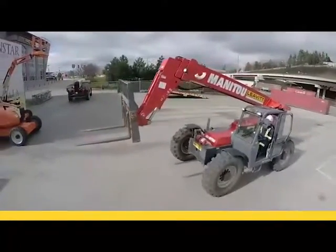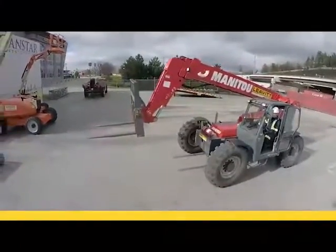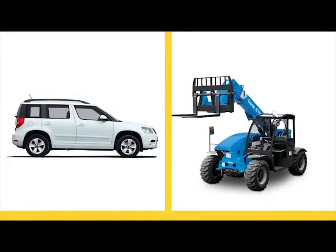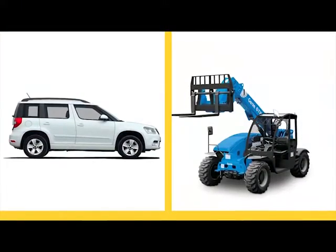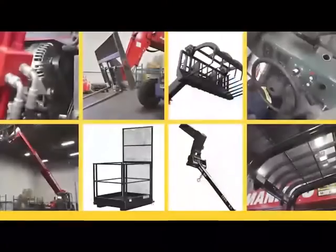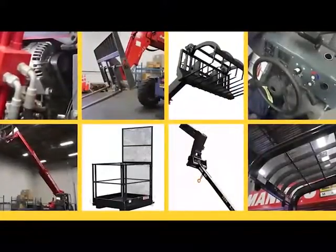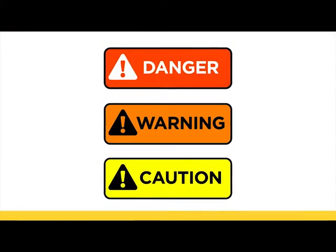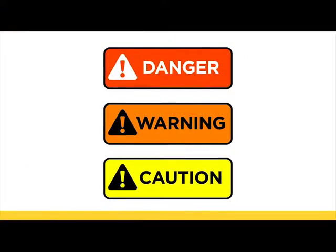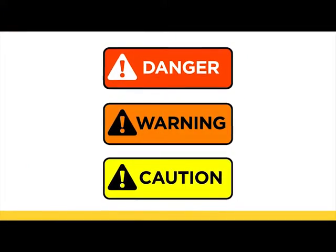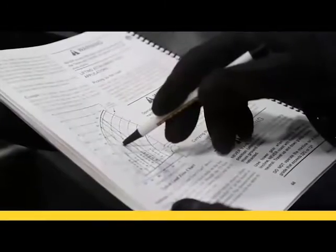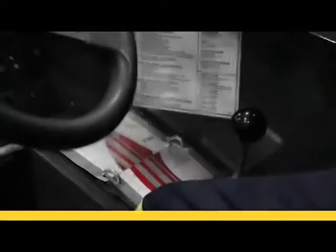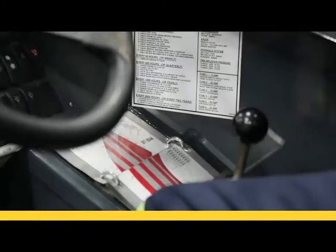By the end of this chapter, you should be able to: describe the differences between automobiles and telehandlers; list important telehandler components; identify safety symbols and explain their meaning; and express the importance of reading and understanding the operator's manual and load chart.